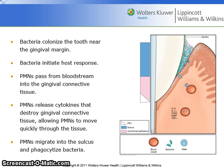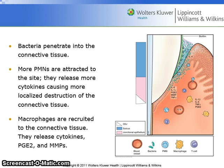Bacteria colonize the tooth near the gingival margin and initiate the host response. PMNs pass from the bloodstream into the gingival connective tissue. The PMNs release cytokines that destroy the gingival connective tissue, allowing the PMNs to move quickly through the tissue. PMNs then migrate into the sulcus and phagocytize bacteria. Bacteria then penetrate into the connective tissue. More PMNs are attracted to the site; they release more cytokines, causing more localized destruction of the connective tissue. Macrophages are recruited to the connective tissues; they release cytokines, PGE2, and MMPs.